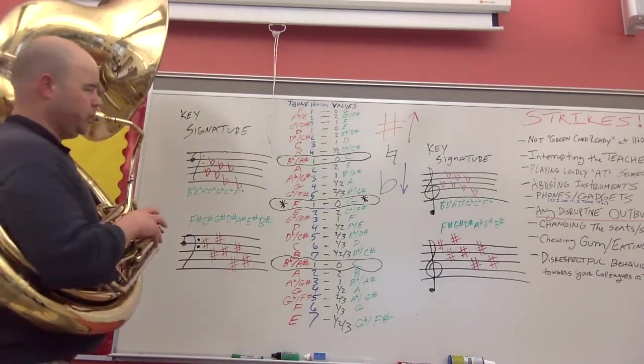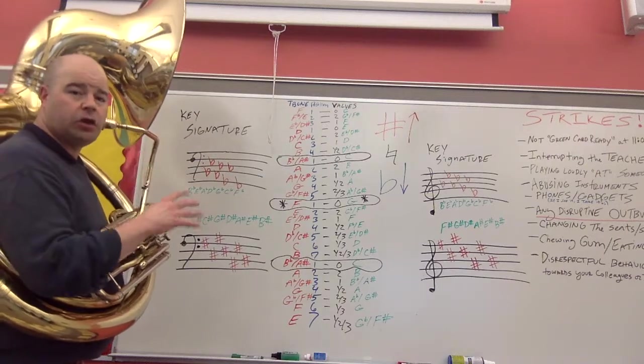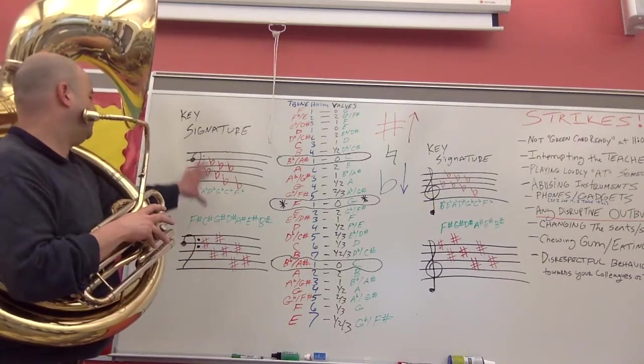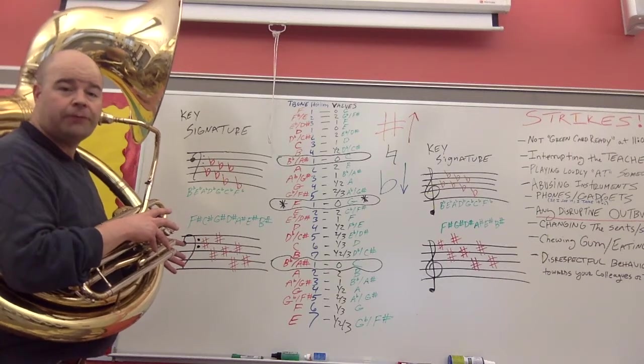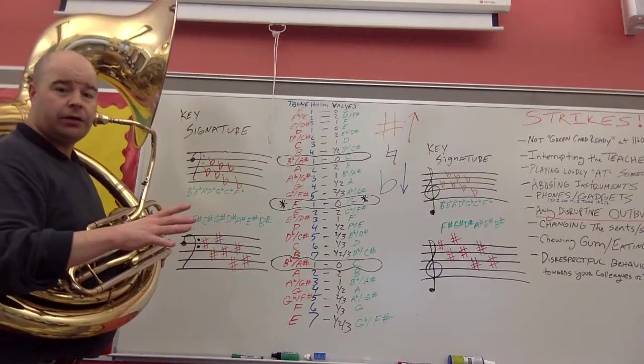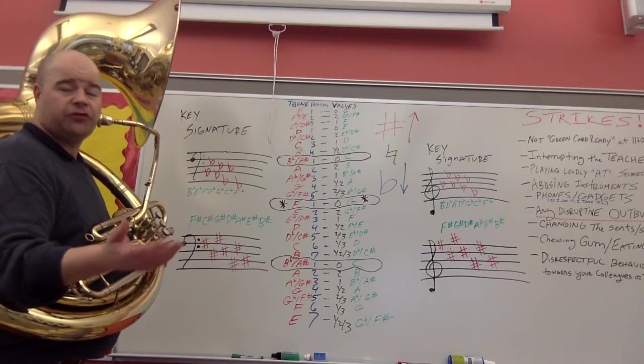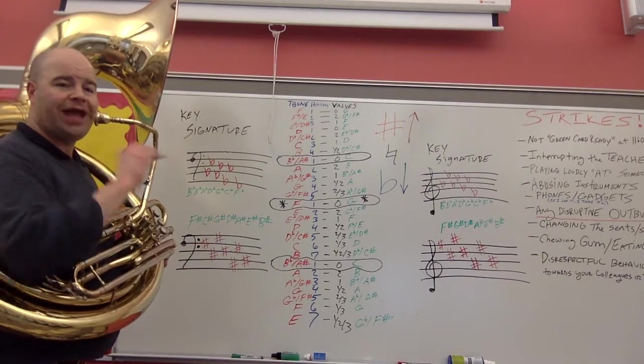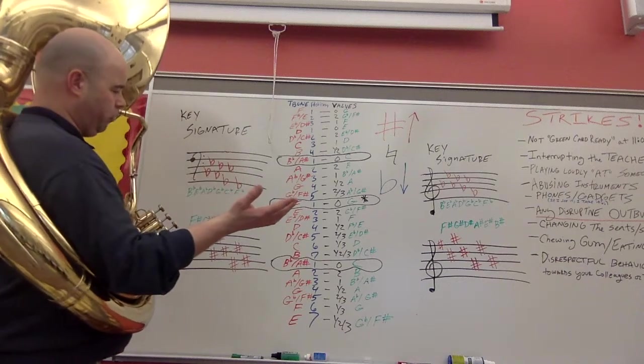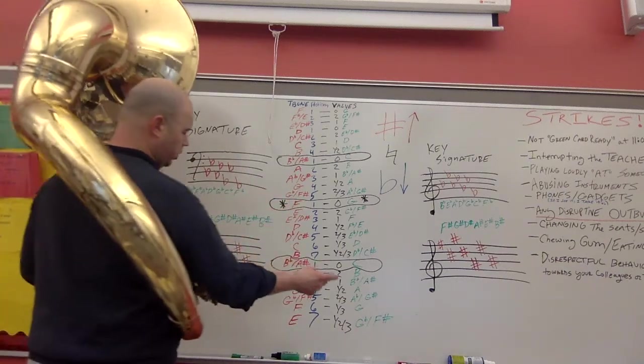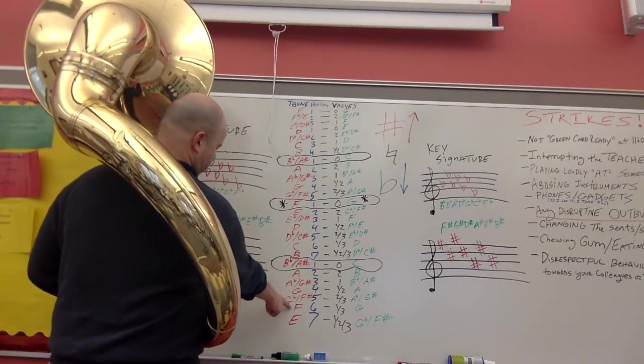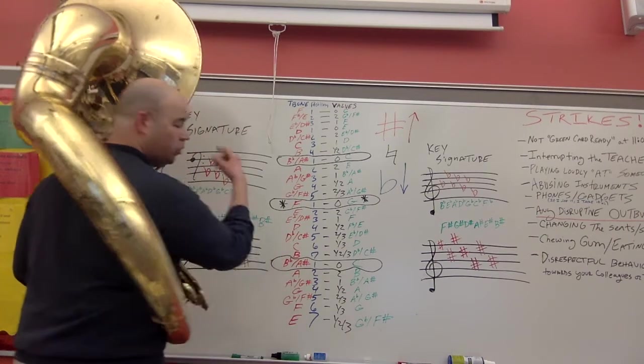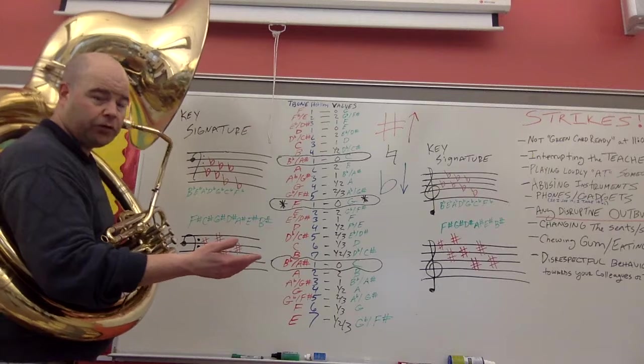All right, so now key signature. The key signature, if you look at the music on the far left side, you're going to see a bunch of extra sharps and flats or maybe you'll see nothing. If you see nothing like trumpets when we were first starting, you didn't have anything in that key signature over there. That means you play every note in its natural form. So if I'm looking up here, you have an E natural, F natural, G natural, A natural, B natural, C natural, so on and so forth.